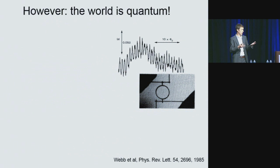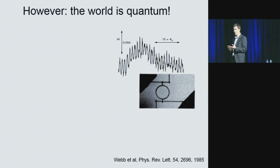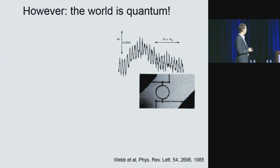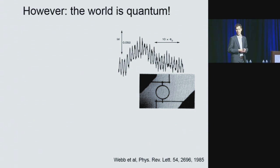In quantum systems, an electron, for instance, can be in more than one place at the same time. You can even see this in electronic devices. At low temperature, electrons can flow through the two arms of a ring simultaneously, and every electron, as a result, interferes with itself.